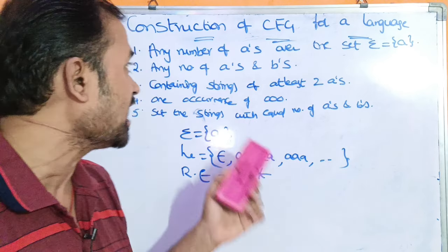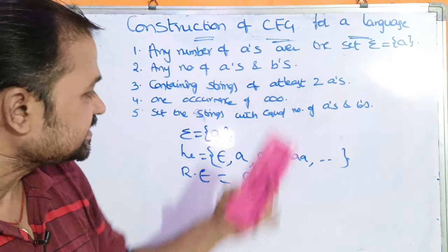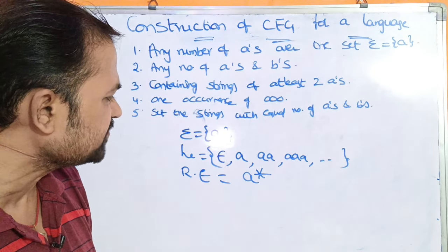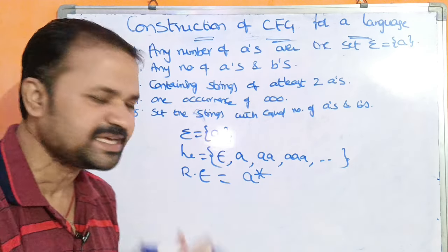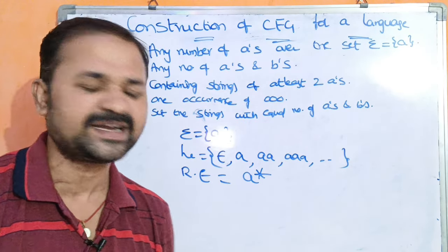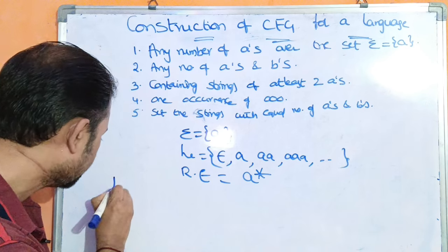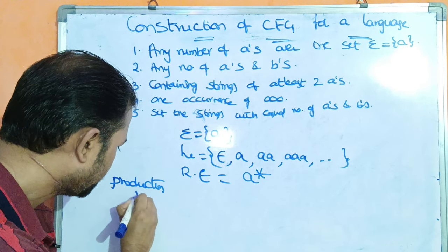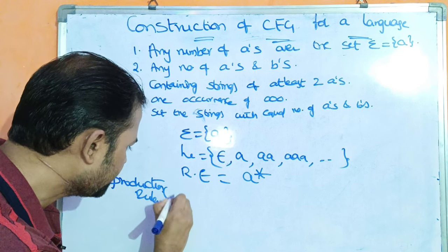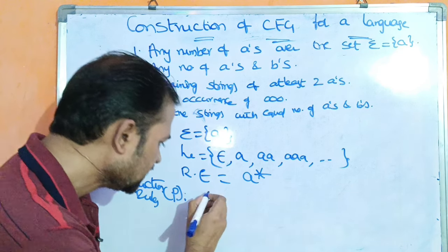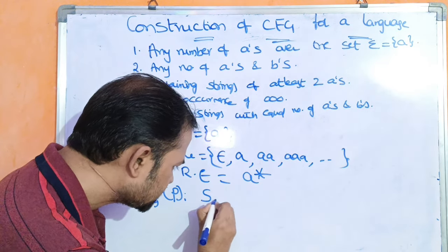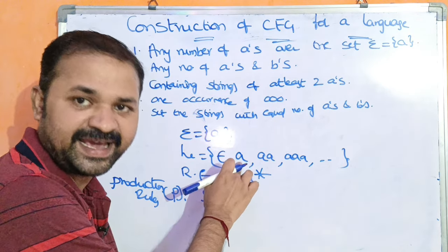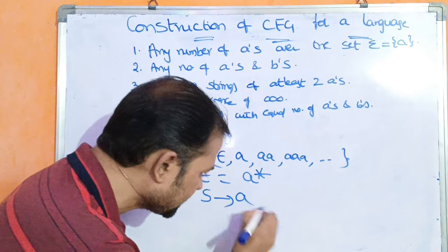Our target is to construct a CFG for this language. For that purpose, let us write production rules. The first production rule: starting symbol S implies the minimum string, which is A — a single A.